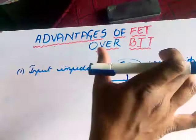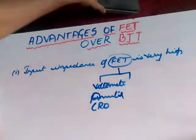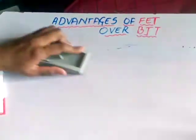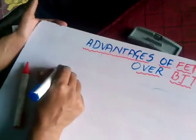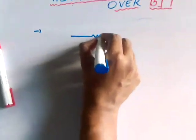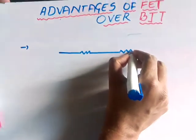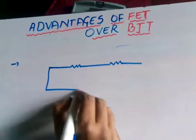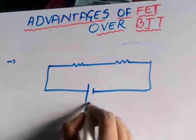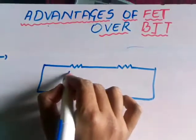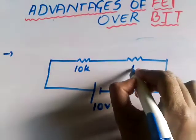We are using them in every device which is used for measurement: voltmeter, current meter, and CROs. Let us consider a series resistance — two resistors in series — which is having a source of 10 volts. Let us consider this one as 10K and this one as 10K.